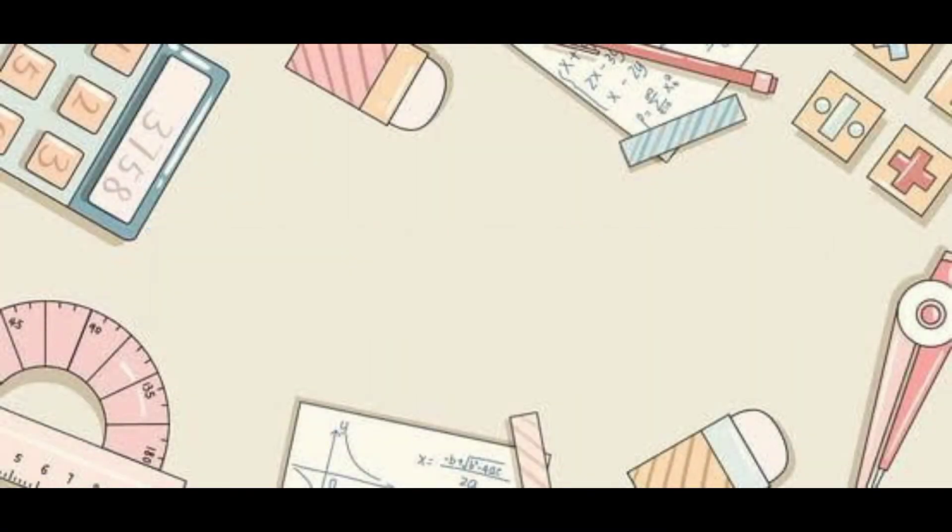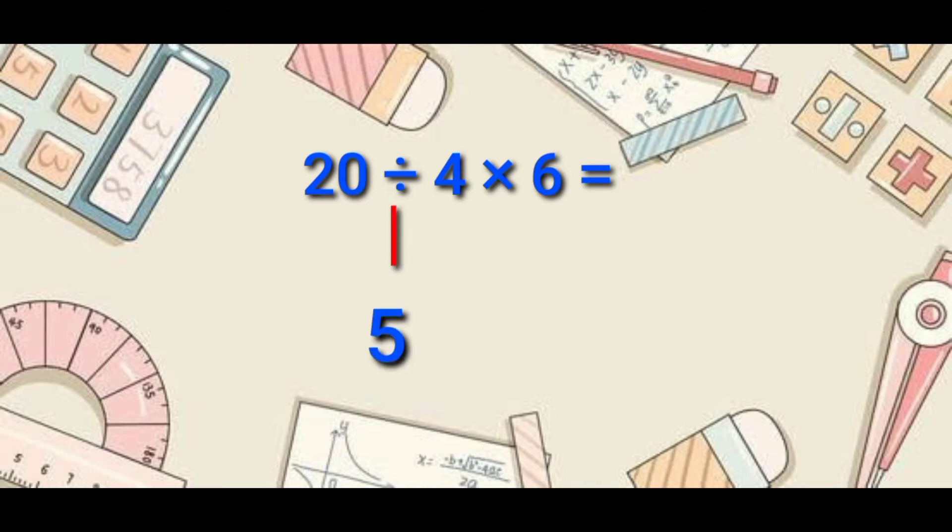Examples. In this example, 20 divided by 4 times 6. We need to do the division first because it is in the left side. So 20 divided by 4 is equal to 5. Then let's multiply it to 6. So the answer is 30.